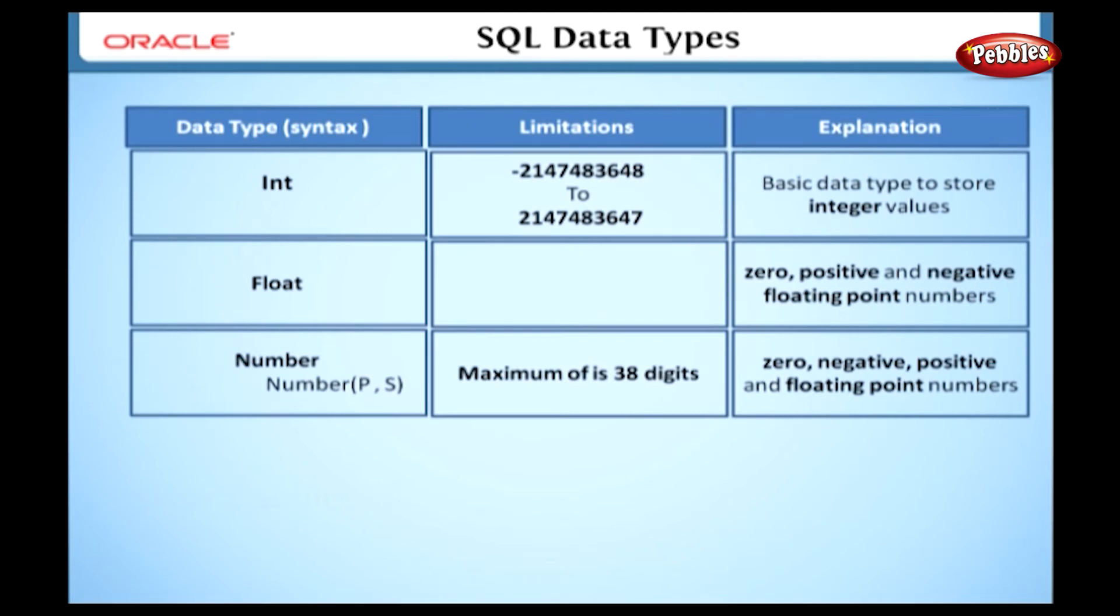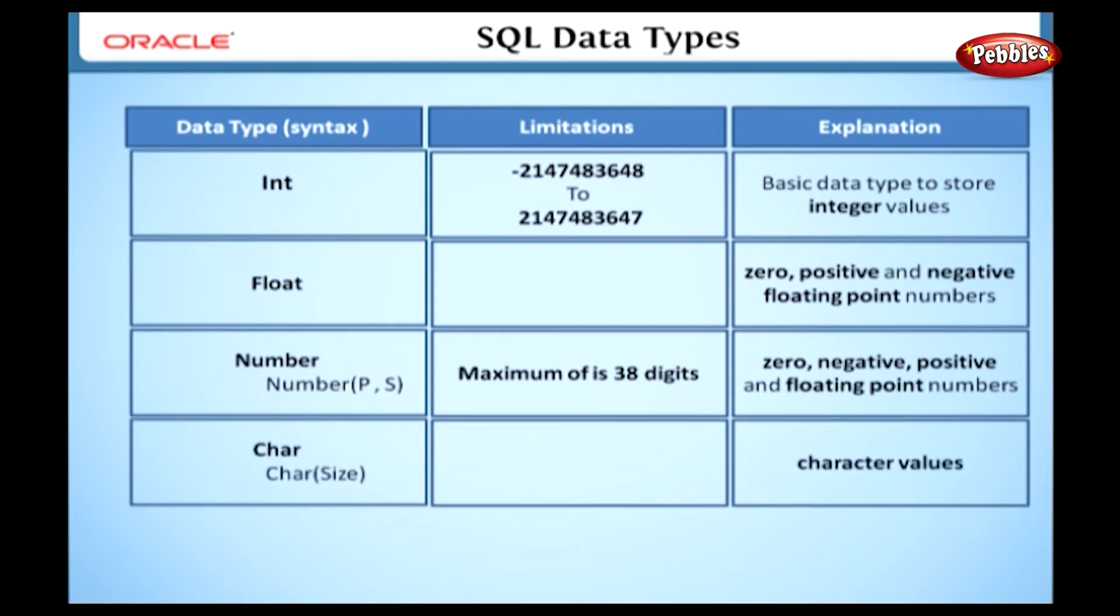Number. In this type, we can store zero, negative, positive, and floating point numbers. In this syntax, p is the precision, and s is the scale. In this type, we can store maximum 38 digits. For example, if we give the number 7, 2, it specifies the number has 5 digits before the decimal, and 2 digits after the decimal.